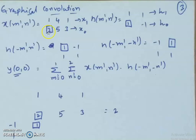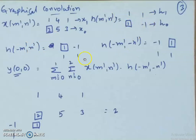To compute y[0,0]: x[m',n'] is simply x[m,n] with a dummy variable change. h[m',n'] is the same as h[m,n]. h[-m',n'] is obtained by reversing along the rows while keeping columns the same — so the element at (1,0) moves down to (-1,0), giving h[-m',n'] = [1,-1; 1,1]. Then h[-m',-n'] is obtained by also reversing along the columns, giving [-1,1; 1,1].